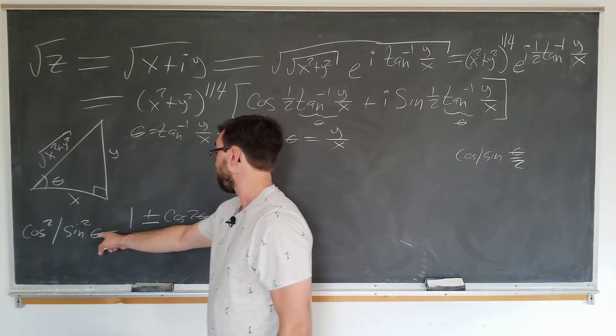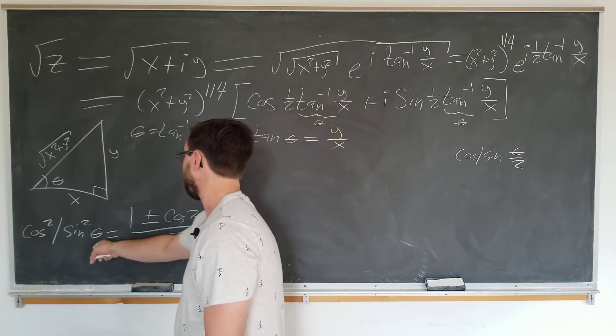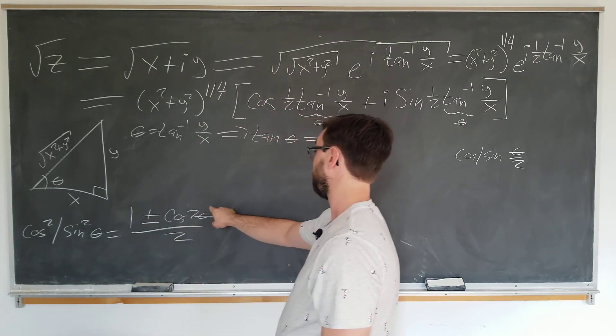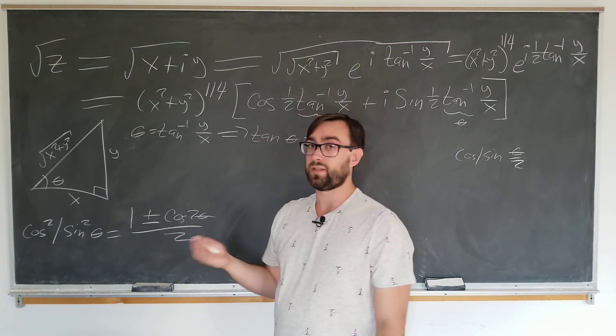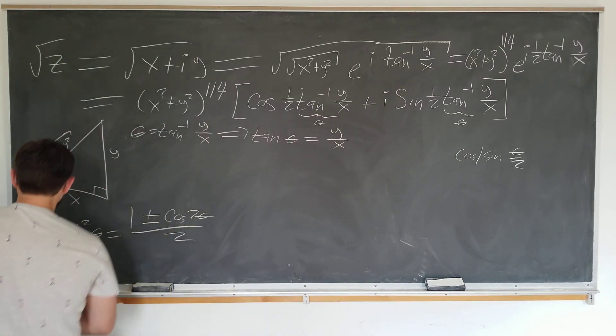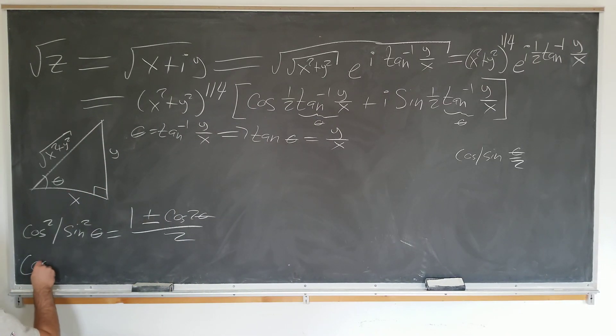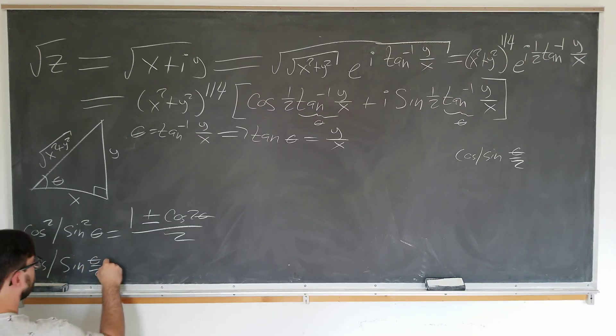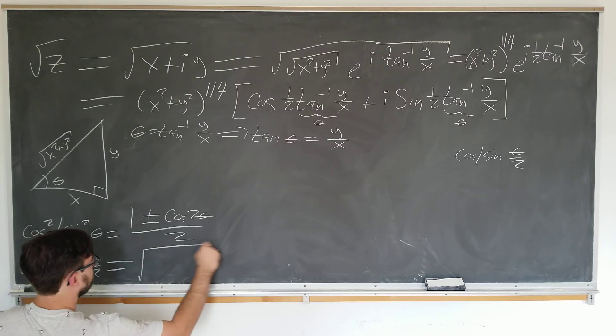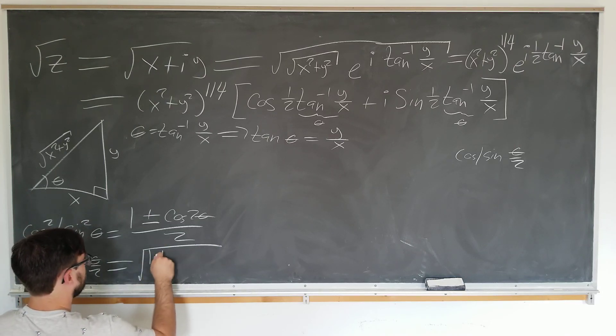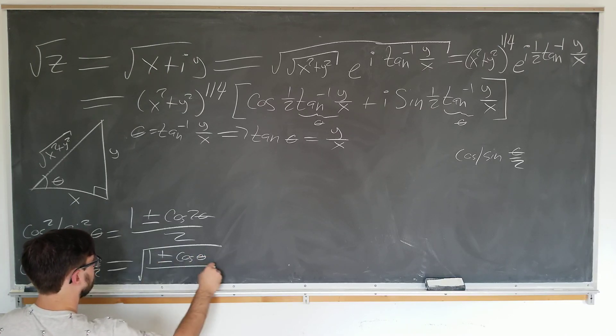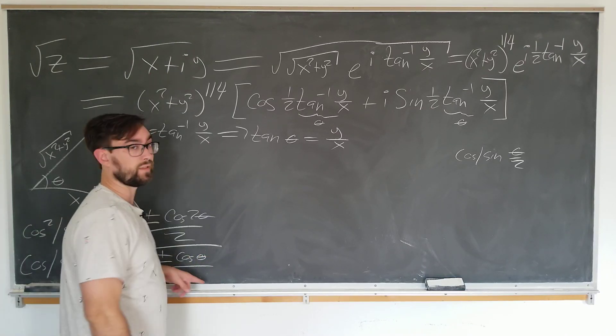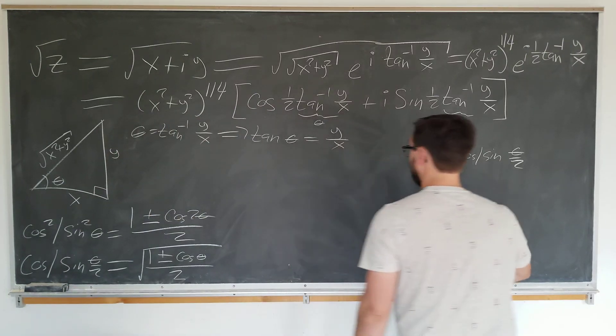But we don't actually want theta here and two theta here. We want to have theta over two here and theta here. That's pretty easy. We'll just take the square root and replace theta by theta over two to do that. So we now know that cosine or sine of theta over two is simply the square root of one plus or minus cosine theta over two. And this is the identity that we need to evaluate these trig functions.